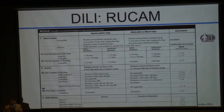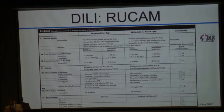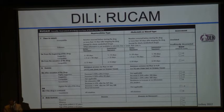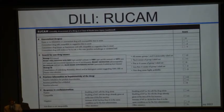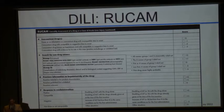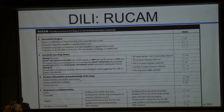The RUCAM has seven domains. Those domains include the latency; the course, which includes de-challenge; risk factors including age and ethanol — though there are no data to support the importance of age or ethanol in the pathogenesis of DILI, and new efforts at revising the RUCAM are excluding them. Other domains include concomitant drugs. In my view, the most important domain is the search for non-drug causes: does the patient have a viral infection, shock liver, and so on. And of course, is there previous information on the hepatotoxicity of the drug? There are some drugs that are classic hepatotoxins and others that are not.